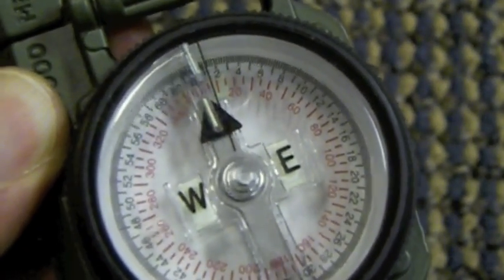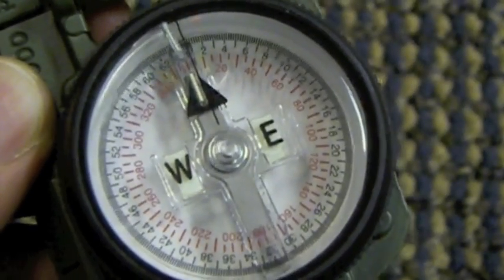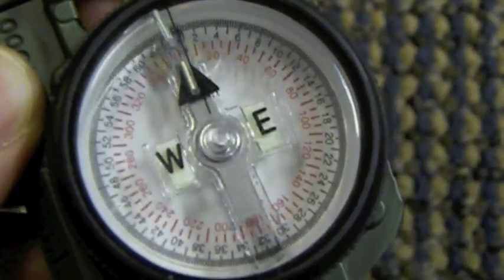Basically, you want 2 degrees on your black line and then the movable line lined up with your north heading of your compass.